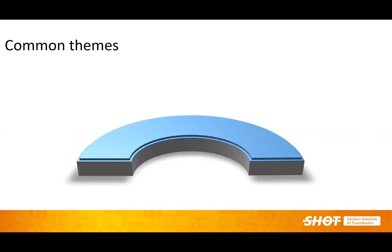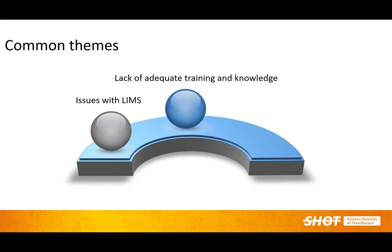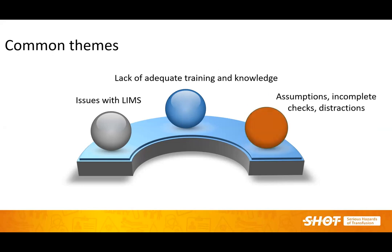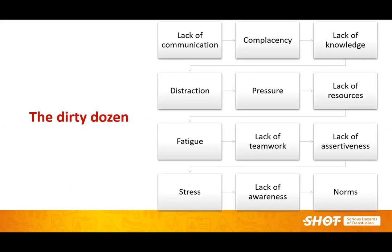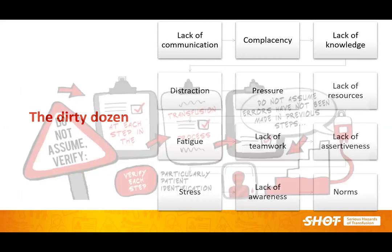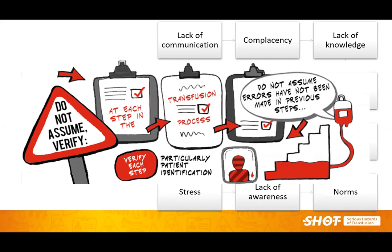Delving deeper into ABO incompatible transfusions and wrong components transfused, common themes emerge: key issues with LIMS — either allowing non-red cell issue in an emergency, or no rule to prevent release of group O FFP in an emergency. Equally, there is lack of adequate staff, training, and knowledge, so staff don't know the rationale for decisions. This leads to assumptions, incomplete checks, distractions, and overriding of flags. One or more of the so-called dirty dozen human factors contributory factors keeps cropping up. All staff in transfusion must remain vigilant, not assume, verify at each step, and build user-friendly, user-centred processes.